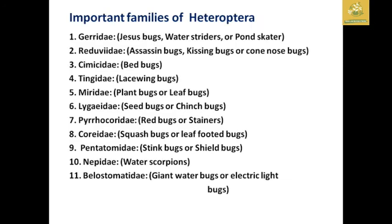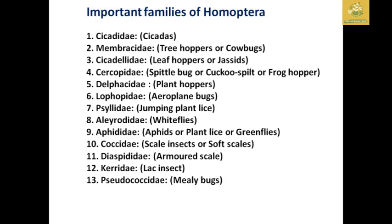The important families of Heteroptera include Gerridae, Reduviidae, and others — eleven important families to remember. The important families of Homoptera include Cicadidae, Membracidae, Cicadellidae, Cercopidae, Delphacidae, Lophopidae, Psyllidae, Aleyrodidae, Aphididae, Coccidae, Diaspidae, Kerridae, and Pseudococcidae — thirteen important families to remember.